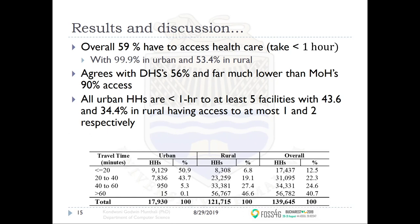Almost all households in urban areas have a health facility within an hour, and all urban households have access to at least five facilities. In rural areas, only 34% have access to at most one facility, and 43% have access to at most two. There is a very big disparity between the rural and urban situations.